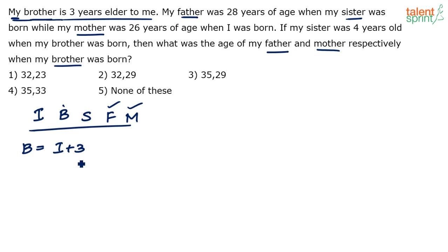So if I am zero years old, brother would be three years old. When I'm five, brother would be eight. When I'm ten, brother would be thirteen. That's the pattern for the first equation.